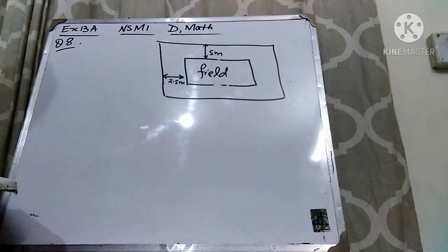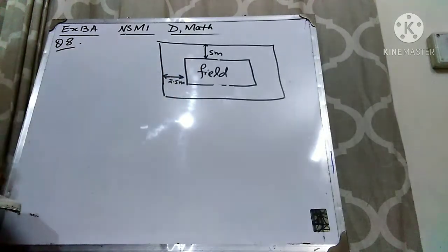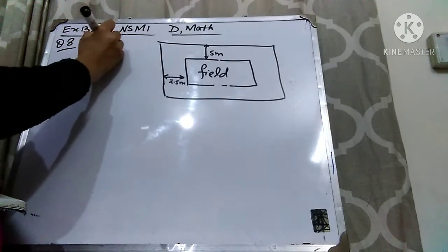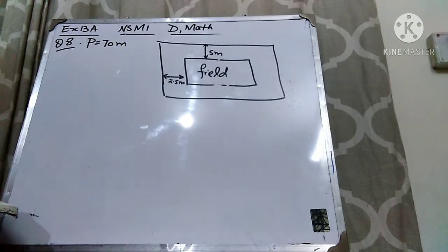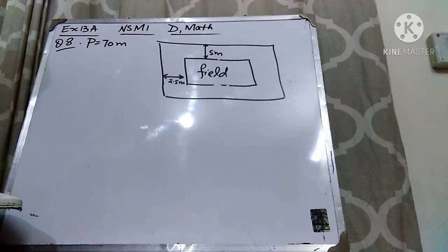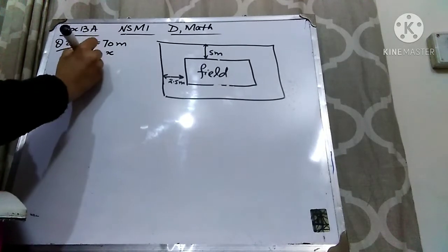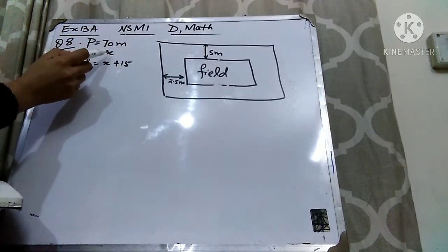Alright students, now let's see what we have to do. The perimeter of this rectangular field is given, which is 70 meters. For that we need length and breadth. Its length is 15 meters longer than its breadth. We do not know the breadth, so we will assume that the breadth is x. As length is 15 meters longer, I will add 15 to the breadth. Breadth is x, and length is x plus 15.